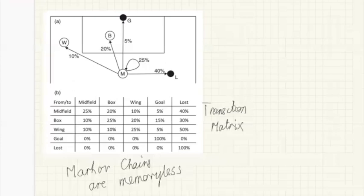The memoryless assumption works as follows: we might have the ball in midfield, pass to the wing, and then pass back to midfield. But the transition matrix is the same as it was before. The ball has gone out from midfield to the wing and come back, but there's still the same probability of passing out to the wing.